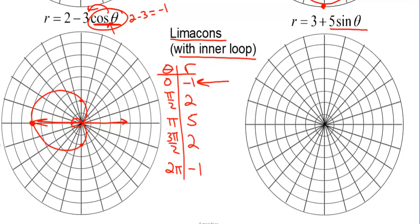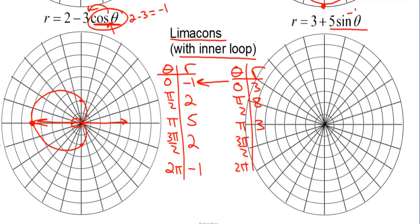The wider side of this limaçon should be on the y-axis. For r equals 3 plus 5 sine theta, counting by pi over 2's: 0, pi over 2, pi, 3 pi over 2, 2 pi. Sine of 0 is 0, so r is 3. Pi over 2: sine is 1, so r is 8. Pi: sine is 0, so r is 3. At 3 pi over 2, sine is negative 1, so 3 minus 5 is negative 2. And 2 pi is back to 3.